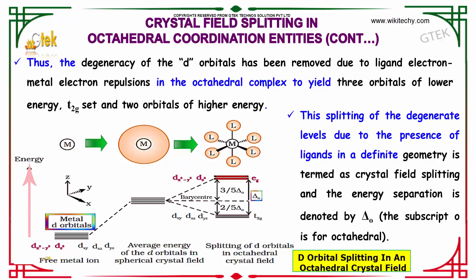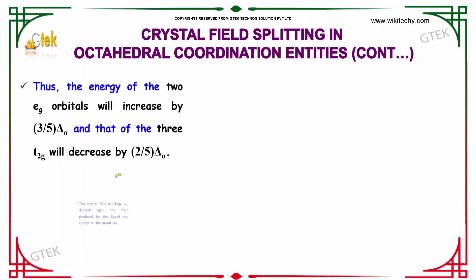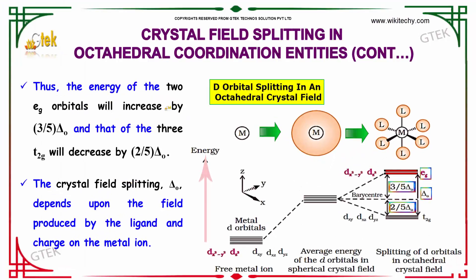Here is the diagram showing the free metal ion and the average energy of the d-orbitals in the spherical crystal field. You can see three lines below and two lines above, representing the splitting of d-orbitals in the octahedral crystal field. The energy of the two eg orbitals increases by 3/5 delta nought, and that of the three t2g orbitals decreases by 2/5 delta nought.